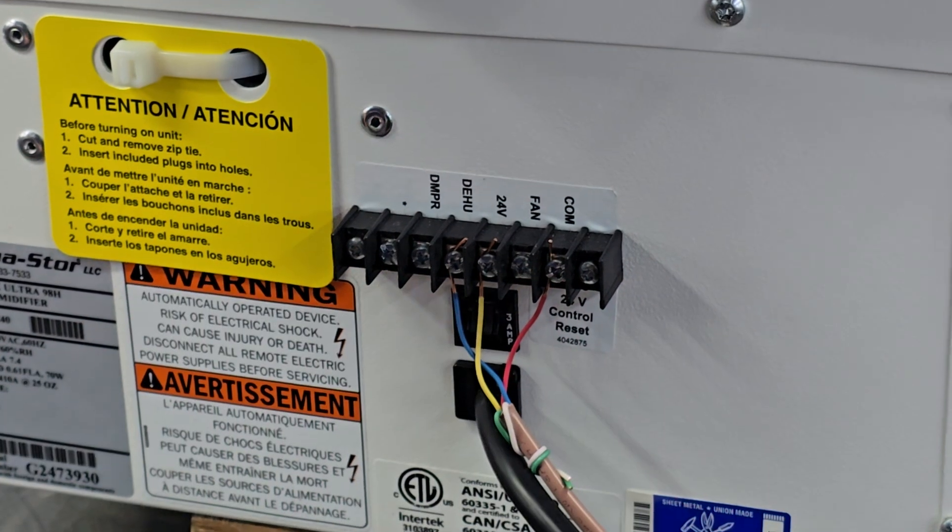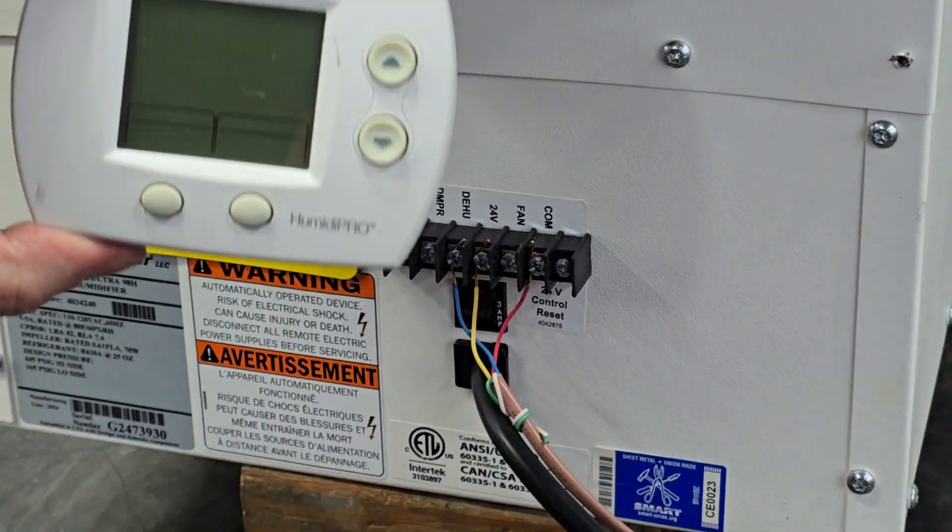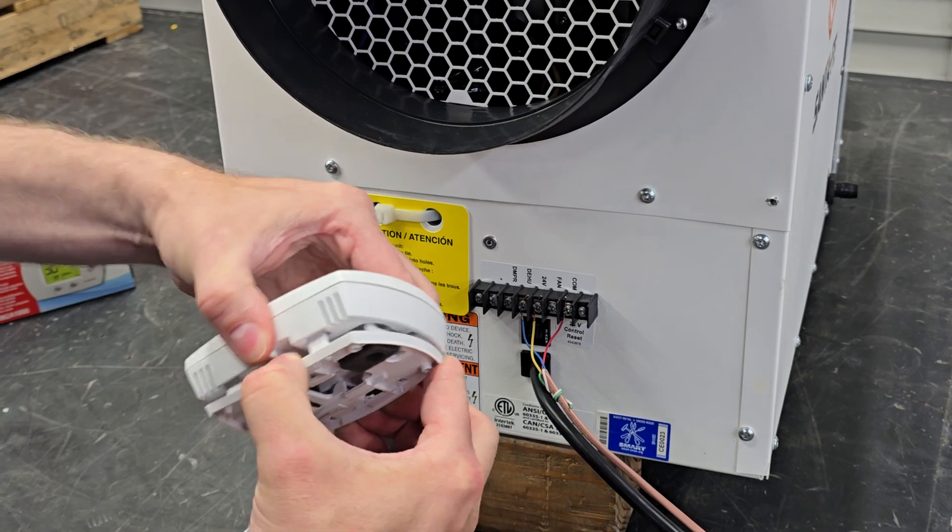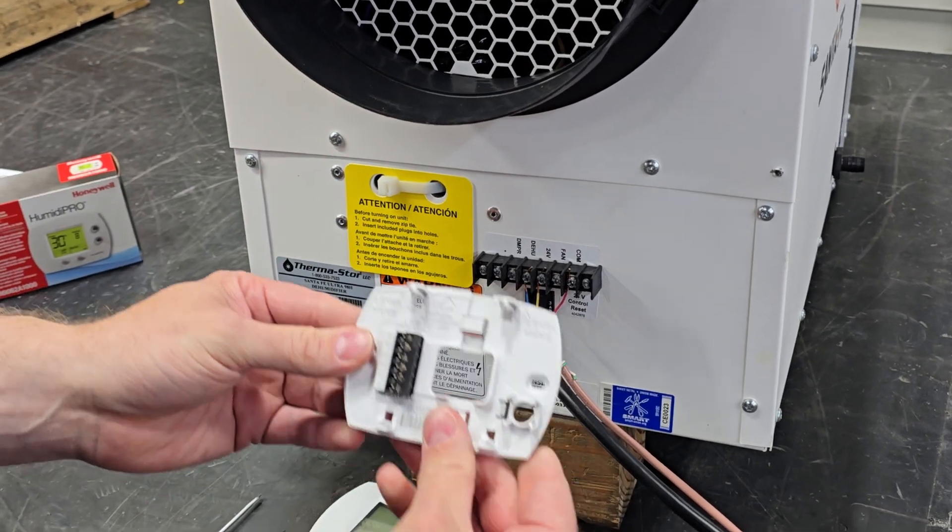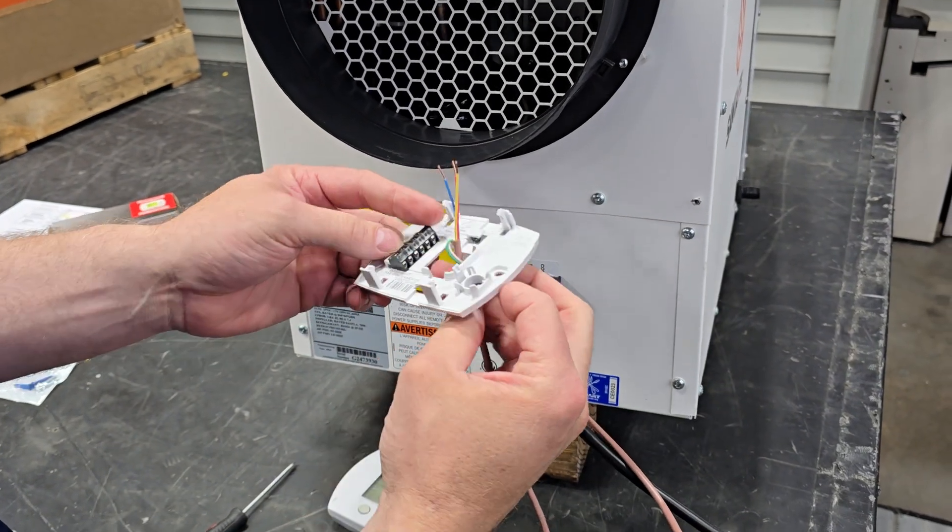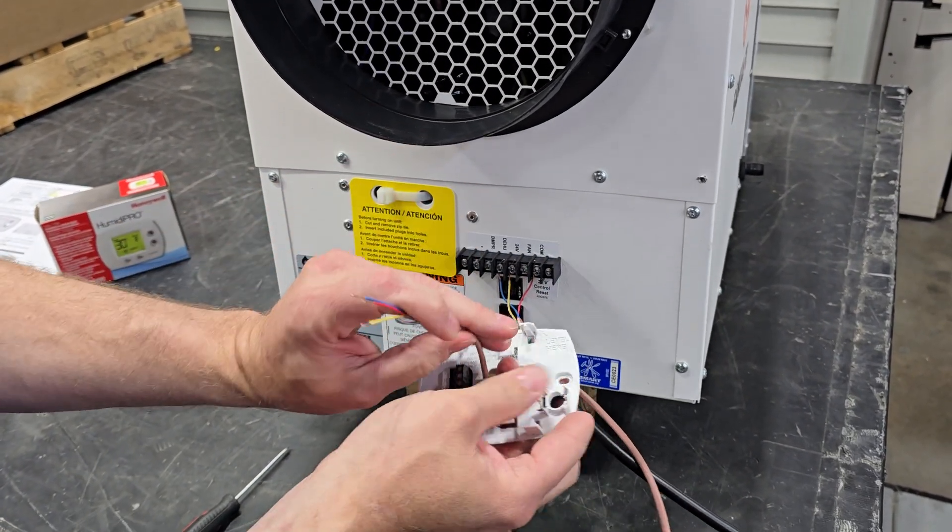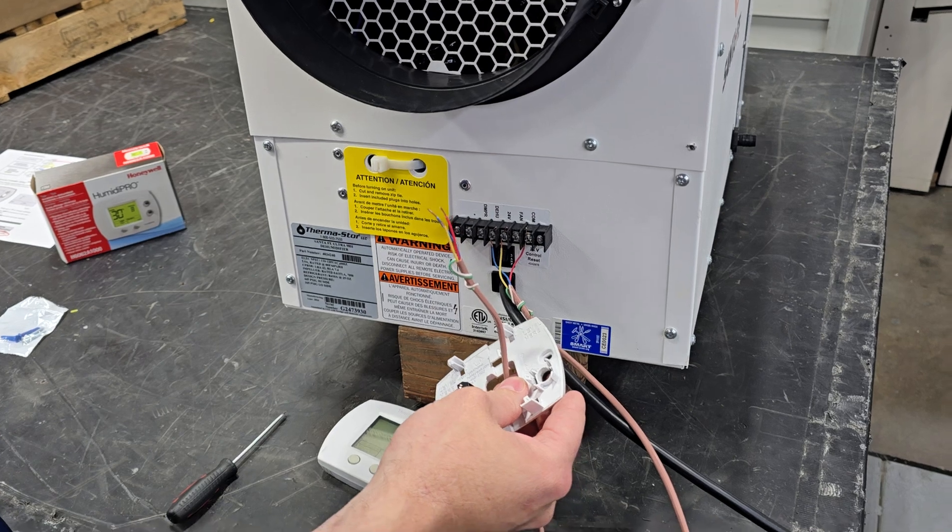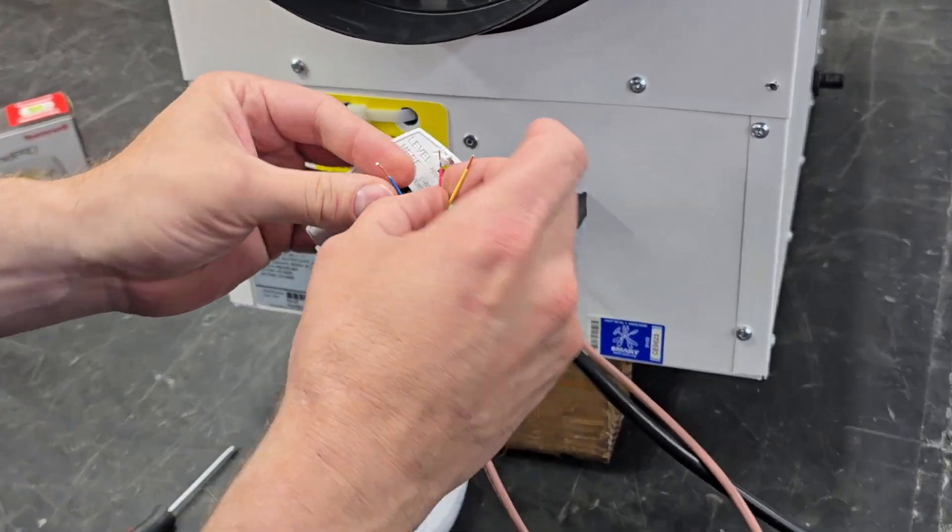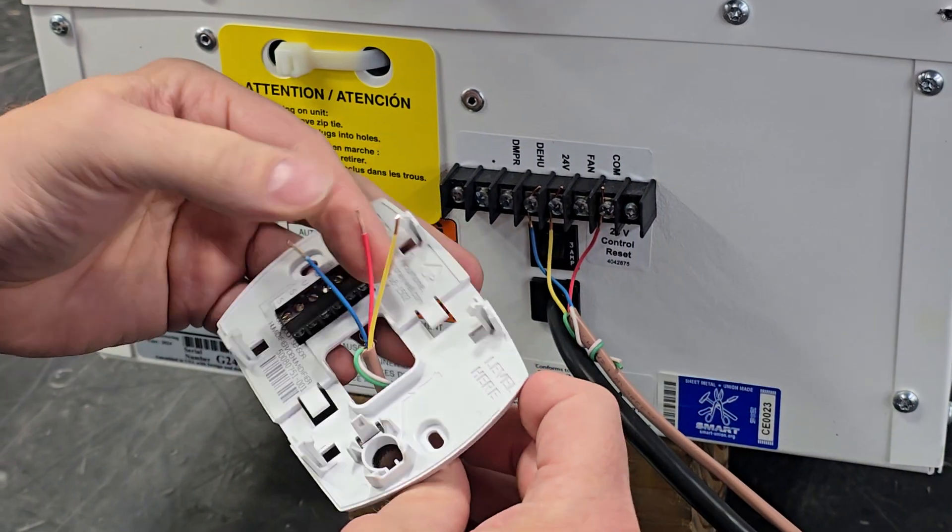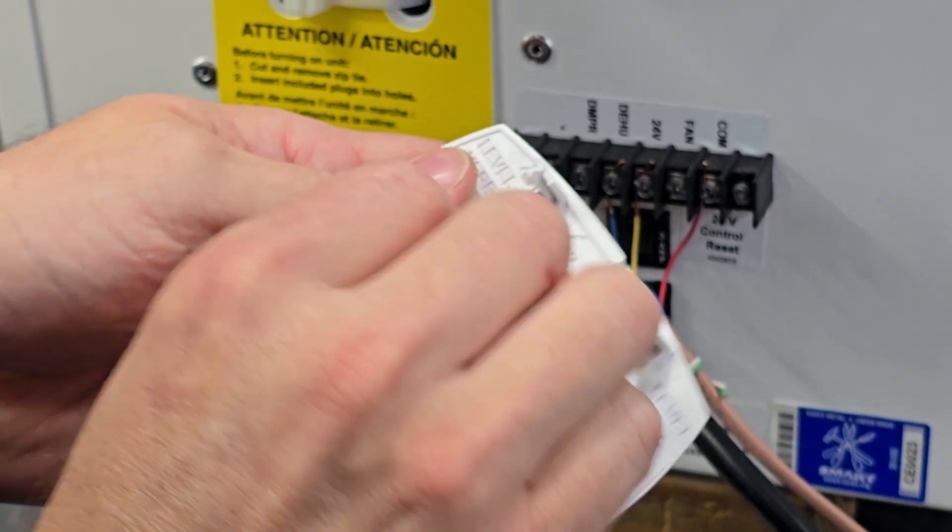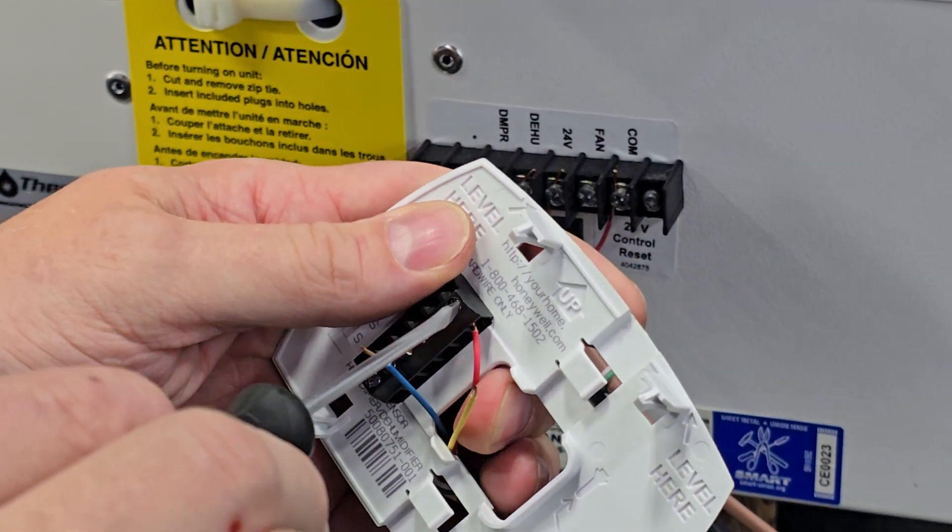Make sure those are nice and firm. Next we'll take the Humidipro control, we'll pinch it and separate the back piece. We'll take our thermostat wires, run them through the back of the backing plate. The red wire will go to C. This is where this small screwdriver comes in handy.